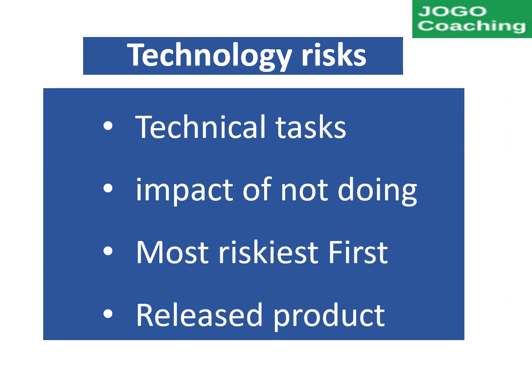The next technique is technology risk-based prioritization. The team will work on technical stories along with user stories. For example, the activities related to test automation, performance improvement, and application security are created as technical stories. By using the technology risk technique, user stories will be prioritized based on the impact of not doing the technical tasks. The most risky story will be prioritized first, and the remaining order will be based on the lesser risky stories in the backlog.